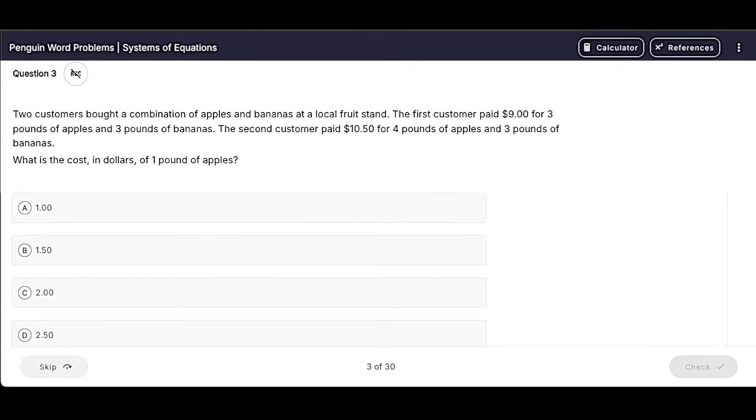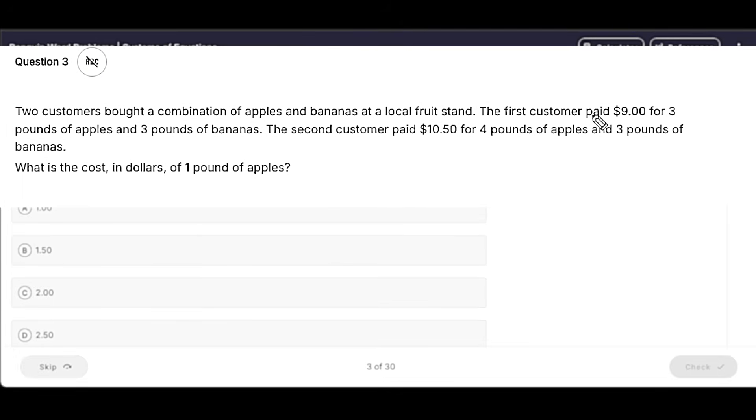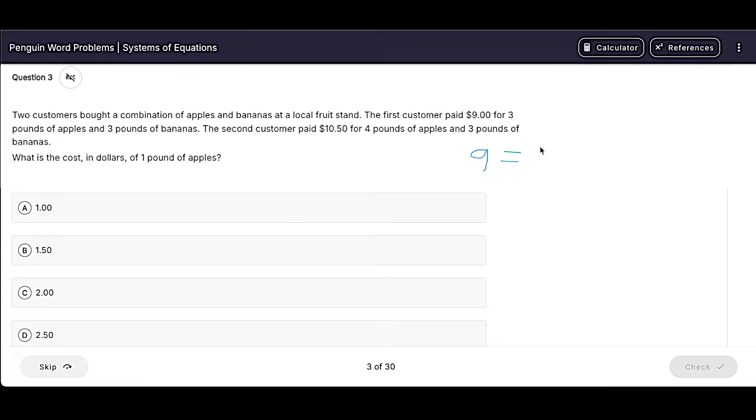Here we've got another common subset. We've got a total. We know it's a total because it's saying the customer paid. So $9 is going to be equal to 3 pounds of apples and 3 pounds of bananas. So I can say something like 3A or 3B, but I'm going to stick with X and Y so that I can plug it into Desmos easily.